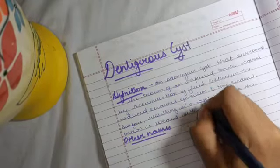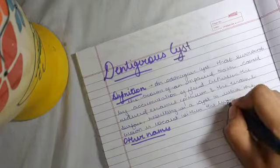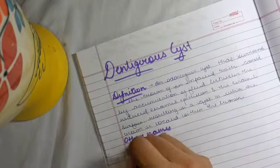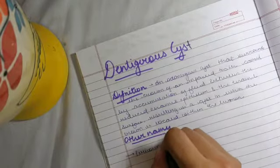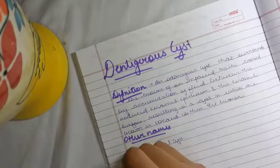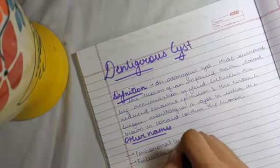I'll explain by diagram what I actually mean. Just remember one thing: the other names are pericoronal cyst or follicular cyst. Now I'll tell you by the diagram what I actually mean.